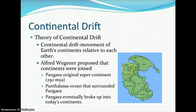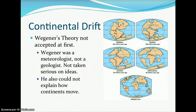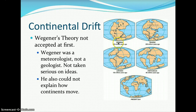You can see the breakup of Pangaea in pictures, including the position of North America. Wegener's theory was not accepted at first because he was a meteorologist and geologists did not take his ideas seriously. He also could not explain how the continents moved. The progression is shown from the Permian period through the Triassic, Jurassic, Cretaceous, and present day.